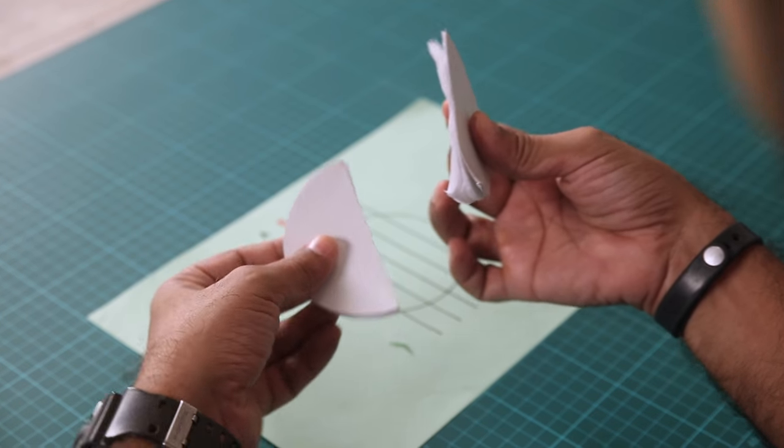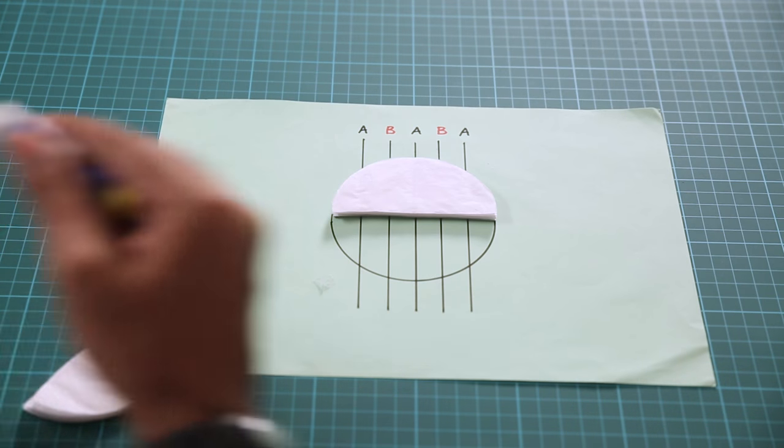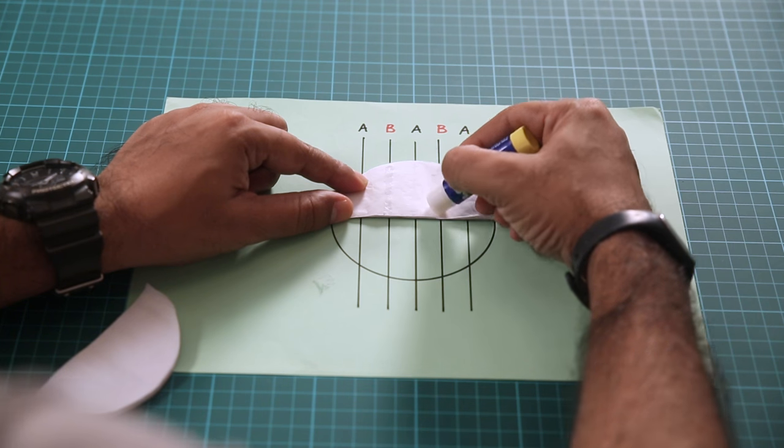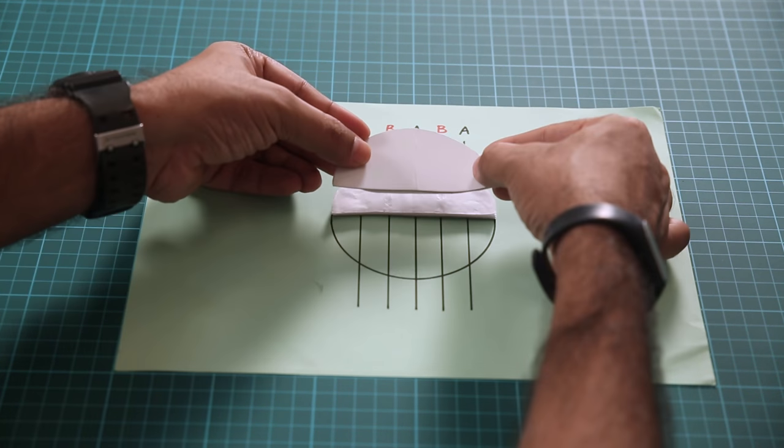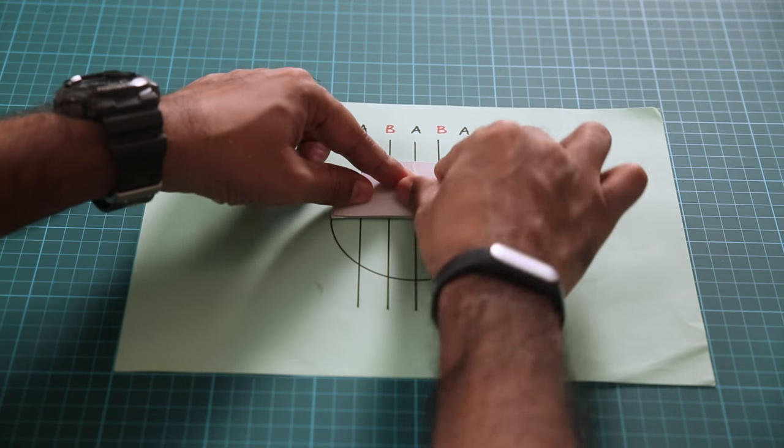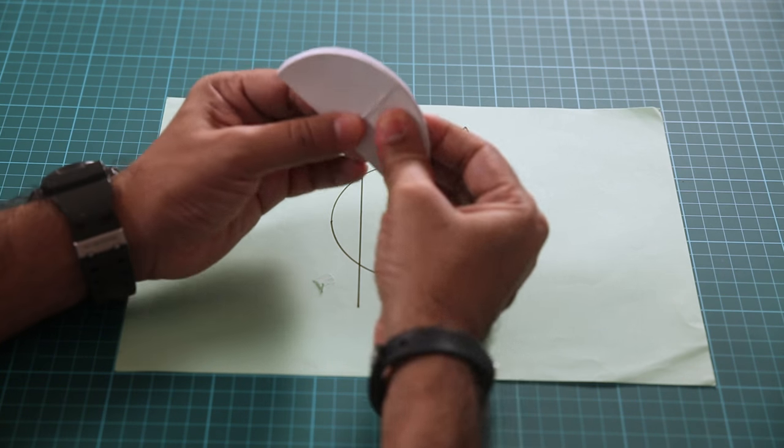Now to stick these two halves, place the first one like this. Now take a glue stick and again apply glue on the line marked B like that. And carefully place the other half on top of it so that both the halves stick together. That's it. That's all you need to do.